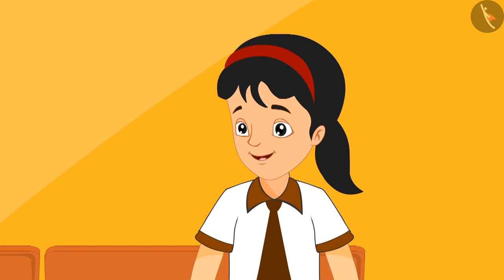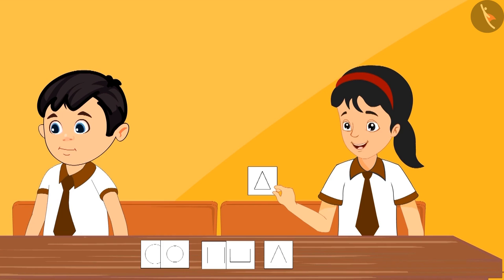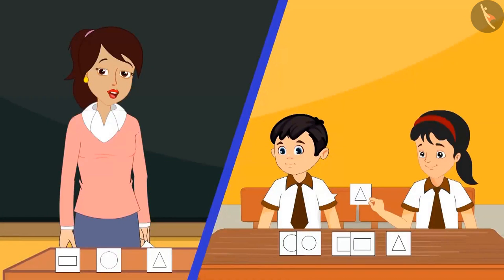Ma'am, why do we call this a triangle? Pinky, because this shape is made of three lines, that's why we call it a triangle. Then that means this is also a triangle, right? Yes, Pinky, you are right. This is also a triangle.